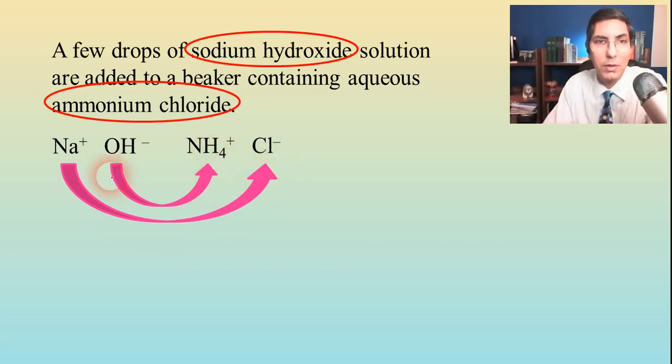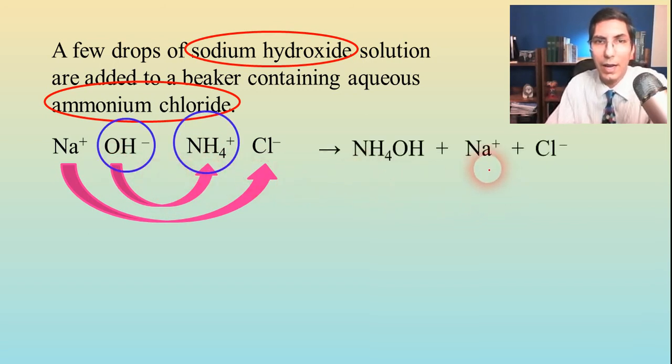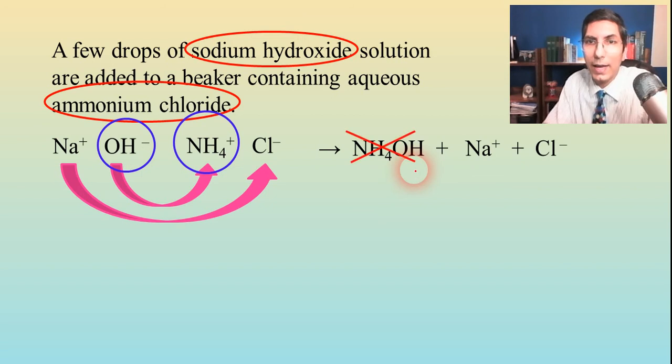But ammonium and hydroxide, those are going to get together. And so that would give us ammonium hydroxide and sodium ions and chloride ions. But you might notice that ammonium hydroxide is one of our three compounds that don't really exist at normal pressures.